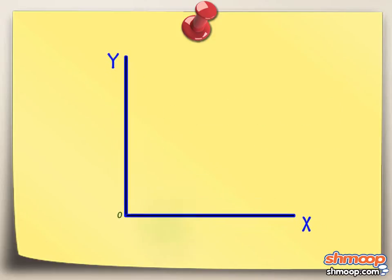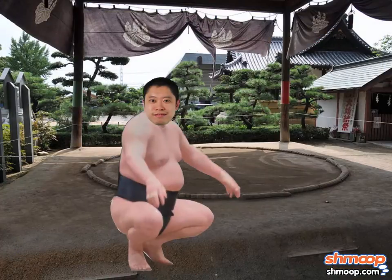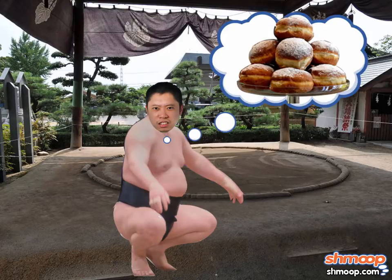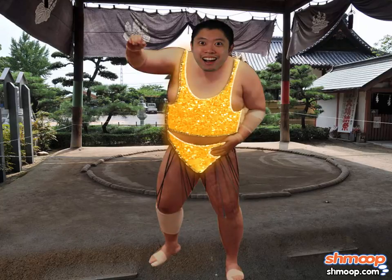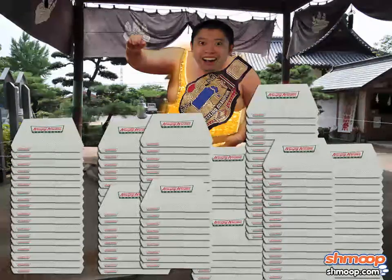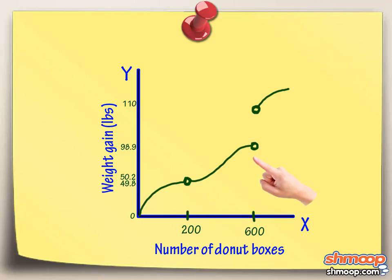He decides to set X as the number of donut boxes he eats, and Y as the number of pounds gained. He decides that if he's going to help out every aspiring sumo wrestler, he's going to need a lot of data. So he sells his 24-karat gold two-piece wrestling suit that he won in the World Championships of 85, and buys 1,000 boxes of donuts, and graphs his weight gain after each box.